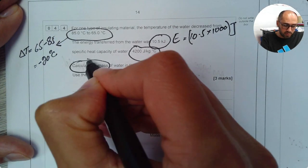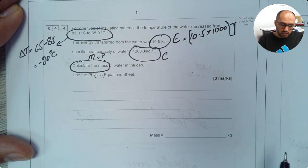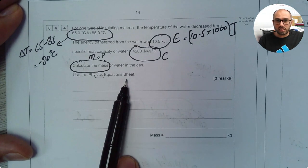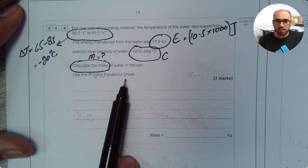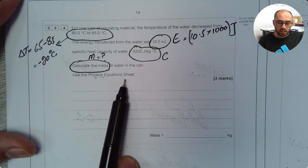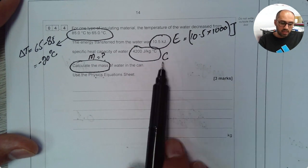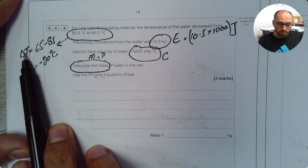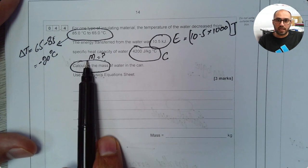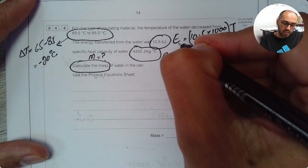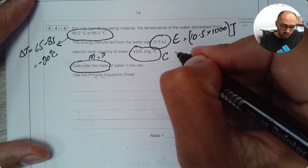It says calculate the mass of water in the can. So calculate the mass means mass is not known. Now it says use the physics equation sheet. So when you go on the equation sheet you will have to pick up equation that contains E, C and delta T plus must also contain M. Now sometimes instead of E they may use letter Q as well.